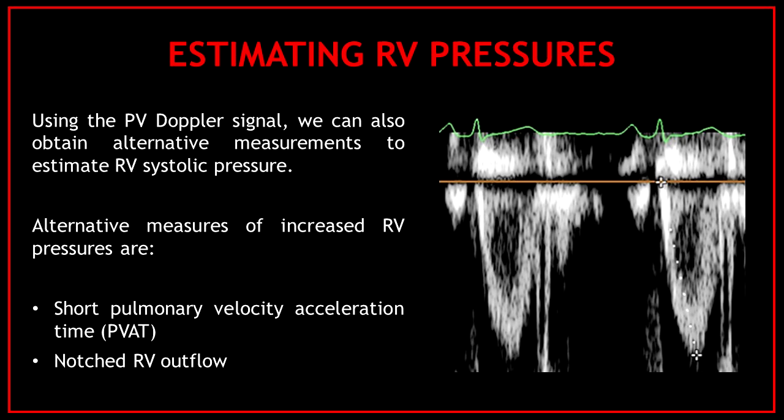Alternative measures of increased right ventricular pressures are a short pulmonary velocity acceleration time and a notch in the right ventricular outflow tract.